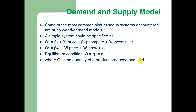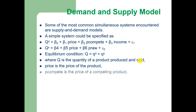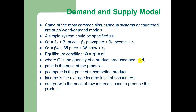In this system, Q is the quantity of a product produced and sold. Price is the own price of the product. P-compete is the price of a competing product, that is a substitute. Income is the average income level of the consumers. And PRA is the price of raw materials used to produce this product.